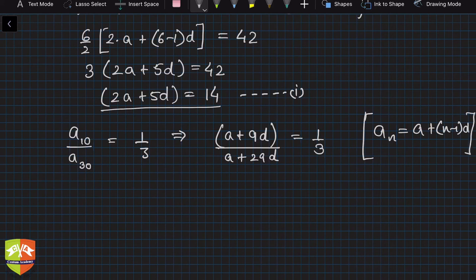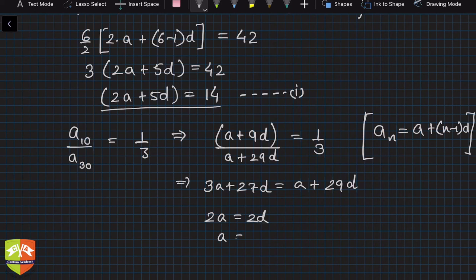Now cross multiply and solve. 3a plus 27d is equal to a plus 29d, right. So what will you get? You will get 2a is equal to 2d, that means a is equal to d. Another equation you got: a is equal to d.